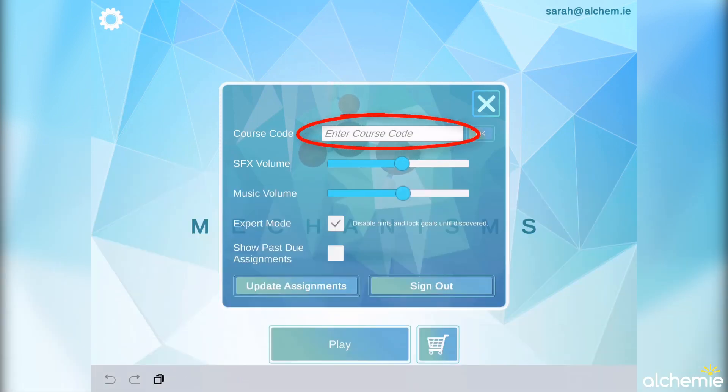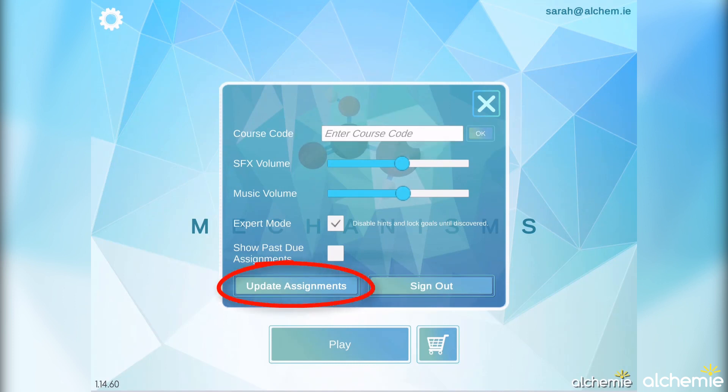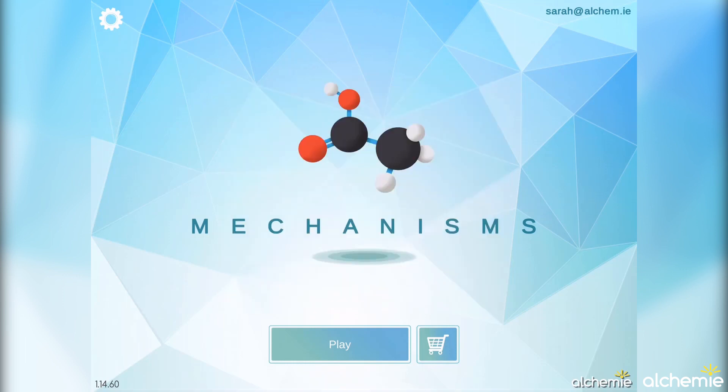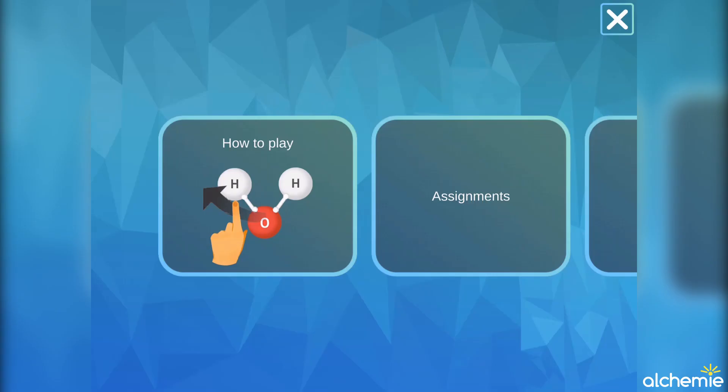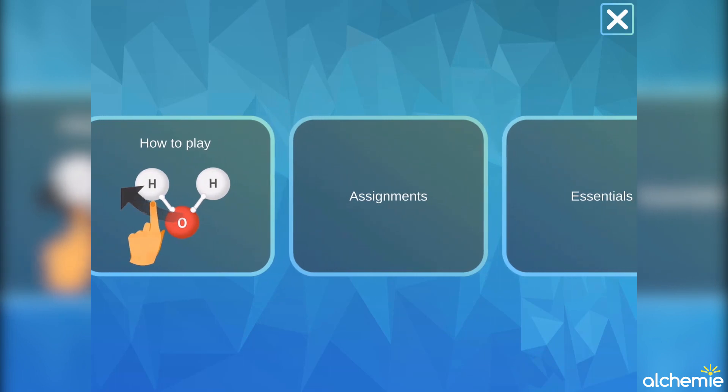Also, under settings is where you can enter the course code provided by your instructor and there's a button so that you can update assignments. Once you have entered in your course code, you can find your assignments made by your instructor by going to the assignments section in the app.